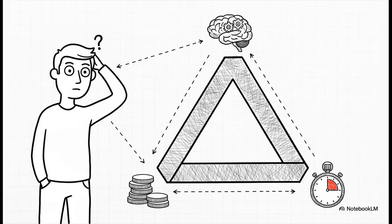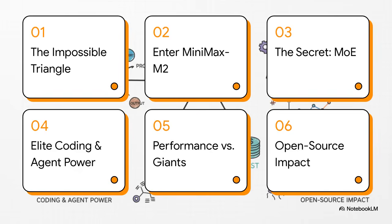You find this incredibly smart model, but it's just so slow — useless for anything real-time. Or you find a lightning-fast one, but its answers are, let's be honest, kind of dumb. And then there's the one that's both smart and fast, but running it costs an absolute fortune. It's a constant compromise. So in this explainer, we're going to see how Minimax M2 is trying to break that triangle.